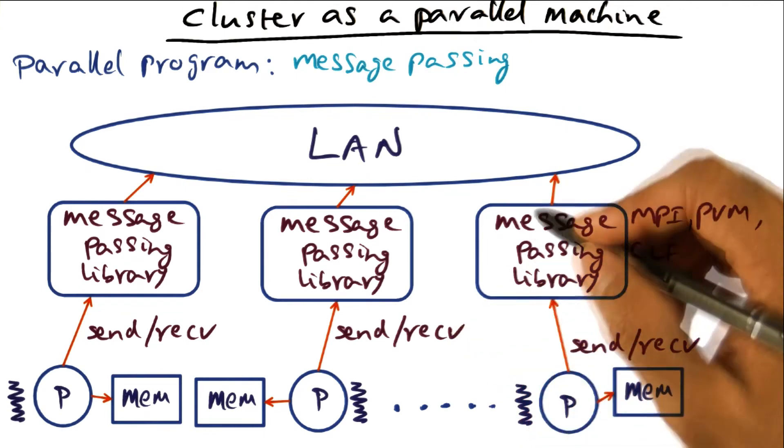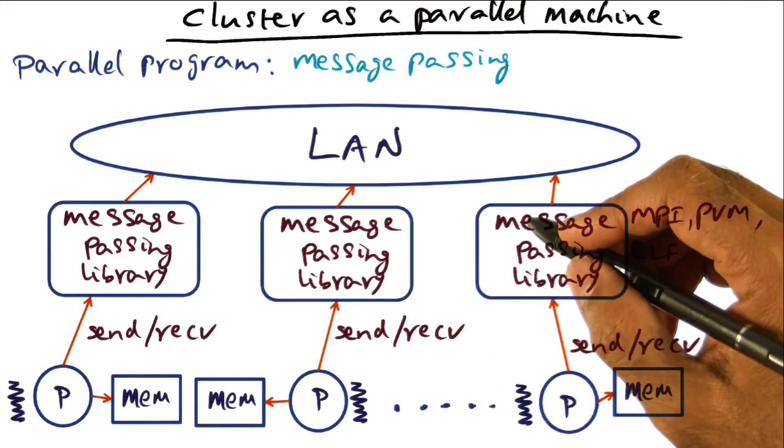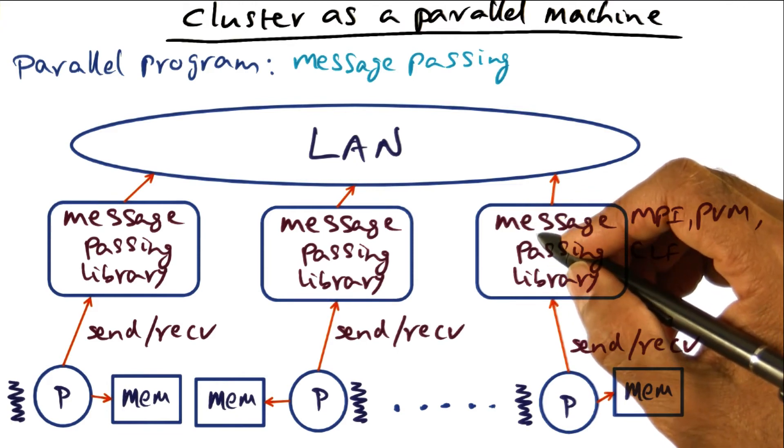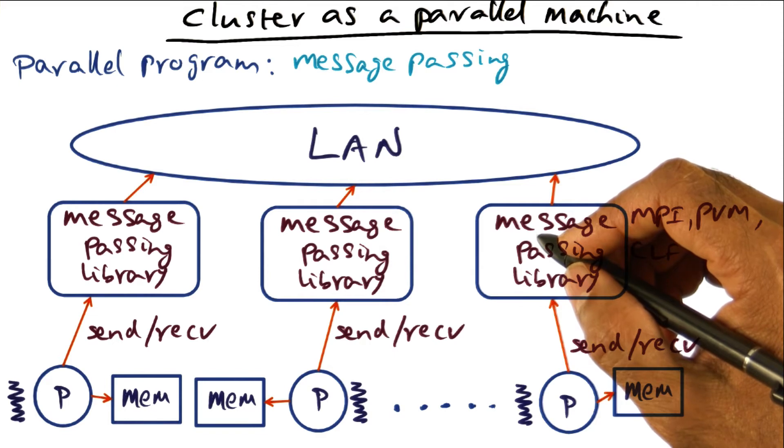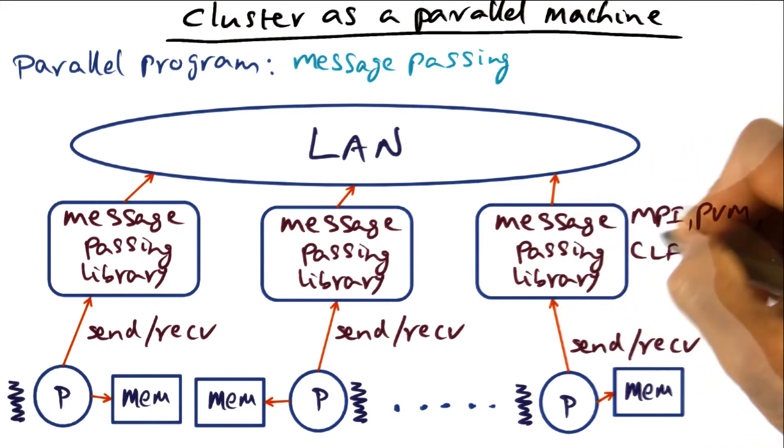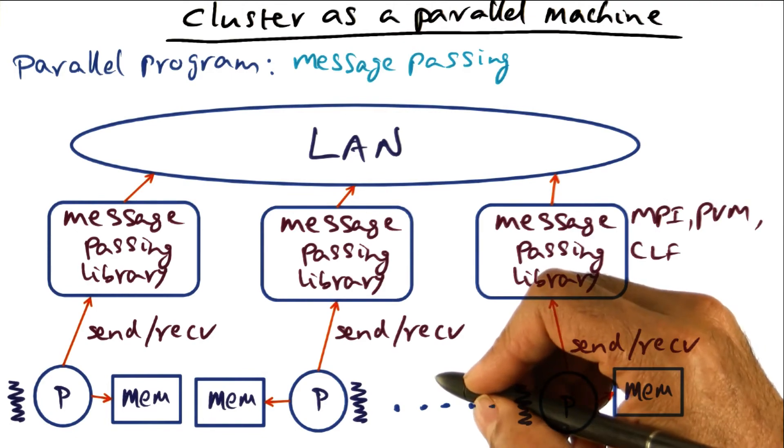And to this day, many scientific applications running on large scale clusters in national labs like Lawrence Livermore and Argonne National Labs and so on, use this style of programming using MPI as the message passing fabric.